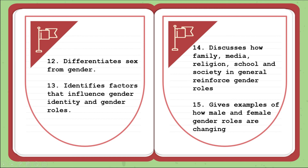Number fifteen: gives examples of how male and female gender roles are changing. After giving examples, the teacher can ask for a show of hands from students who may have experienced changes about their gender if they are okay sharing their experiences or the influences that changed their views as they grow. If no student has experienced a change in their gender role, the teacher can also show videos related to this topic. Thank you very much.